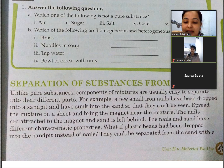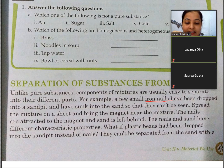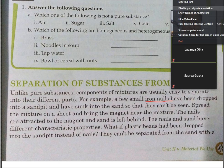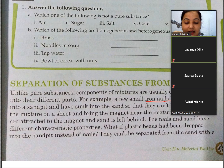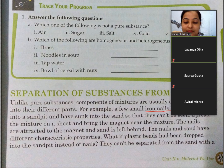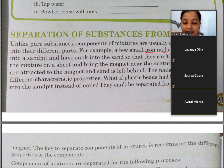What if plastic beads had been dropped into the sand pit instead of nails? They can't be separated from the sand with a magnet. The key to separate components of mixtures is recognizing the different properties of the components. For example, iron nails are attracted to a magnet due to their magnetic property, but plastic beads are not.